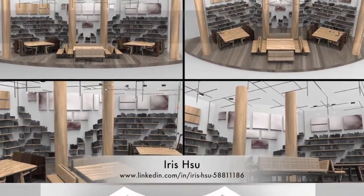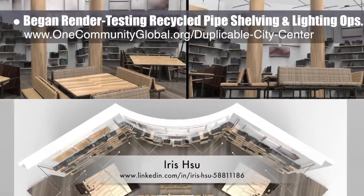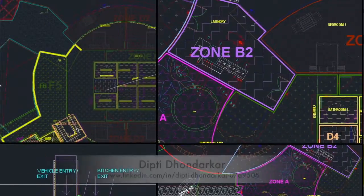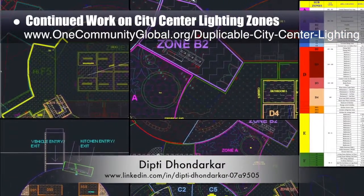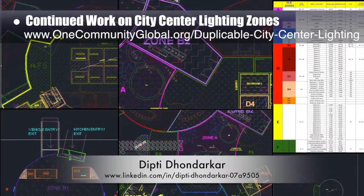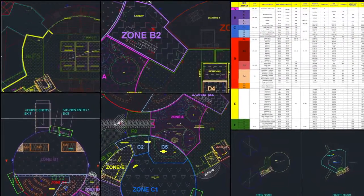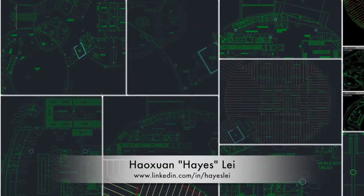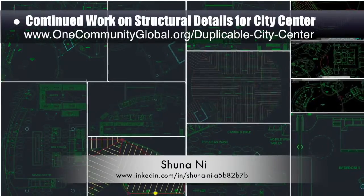Irisu, industrial designer, began render testing the recycled pipe shelving and overhead lighting options for the duplicable city center library — round 17 of work — now including books, columns, and furniture layout details. Dipty Dhondraker, electrical engineer, continued with her 15th week of work on the lighting zones, with final revisions and defining of zones, plus double-checking calculations and spreadsheet details — now 98% complete. Haze Lay, structural engineer, and Chunani, masters of mechanical engineering and civil engineering PhD, also continued work on structural details, designating additional structural walls and updating column placements.